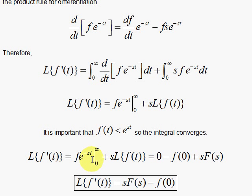So, with that being said, at the upper limit, we have 0, and then at the lower limit, we have e to the 0th power is 1, and f is evaluated at 0, we have f of 0. The second term here is s times the Laplace transform, capital F of s.